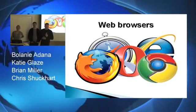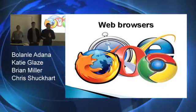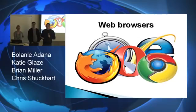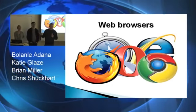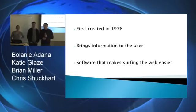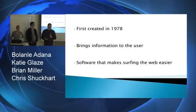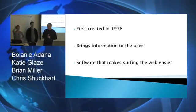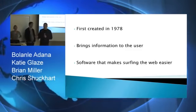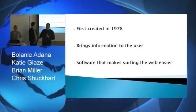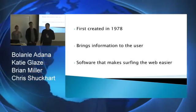The next thing we're going to talk about is web browsers, and this has to do with social networking because web browsers are what make the internet easy to surf. They open up internet forums where people go and talk about whatever they feel like. These were first started in 1978, but they weren't really implemented because the internet was kind of on its first leg. They bring information to the user — instead of typing lines of code, all you have to do is double-click and you're on the internet.